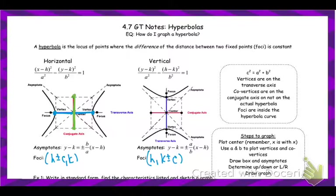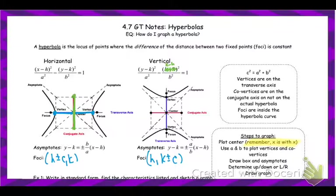To graph a hyperbola: first plot the center, remembering the x-coordinate is next to the x. After plotting the center, use a and b to plot the vertices and co-vertices the same way we did for an ellipse. Then draw the box through those four points, make the X to form the asymptotes, and draw the graph. If the y comes first, draw up and down vertices; if it's horizontal, draw left and right vertices.